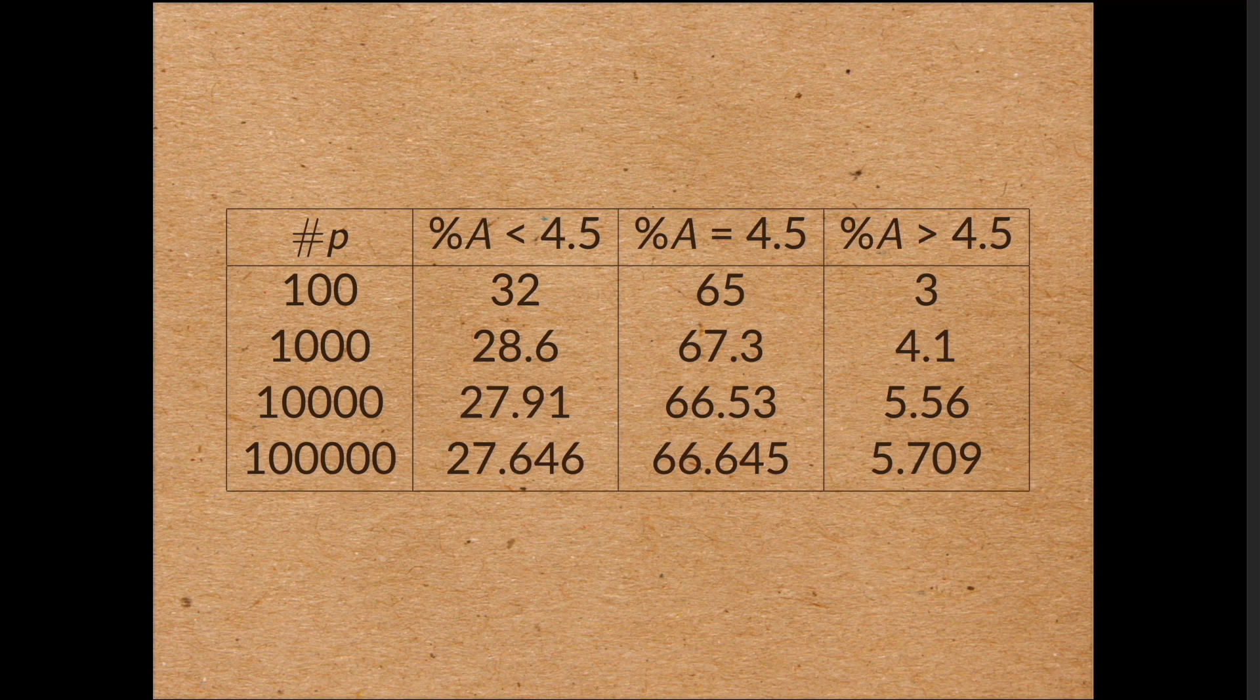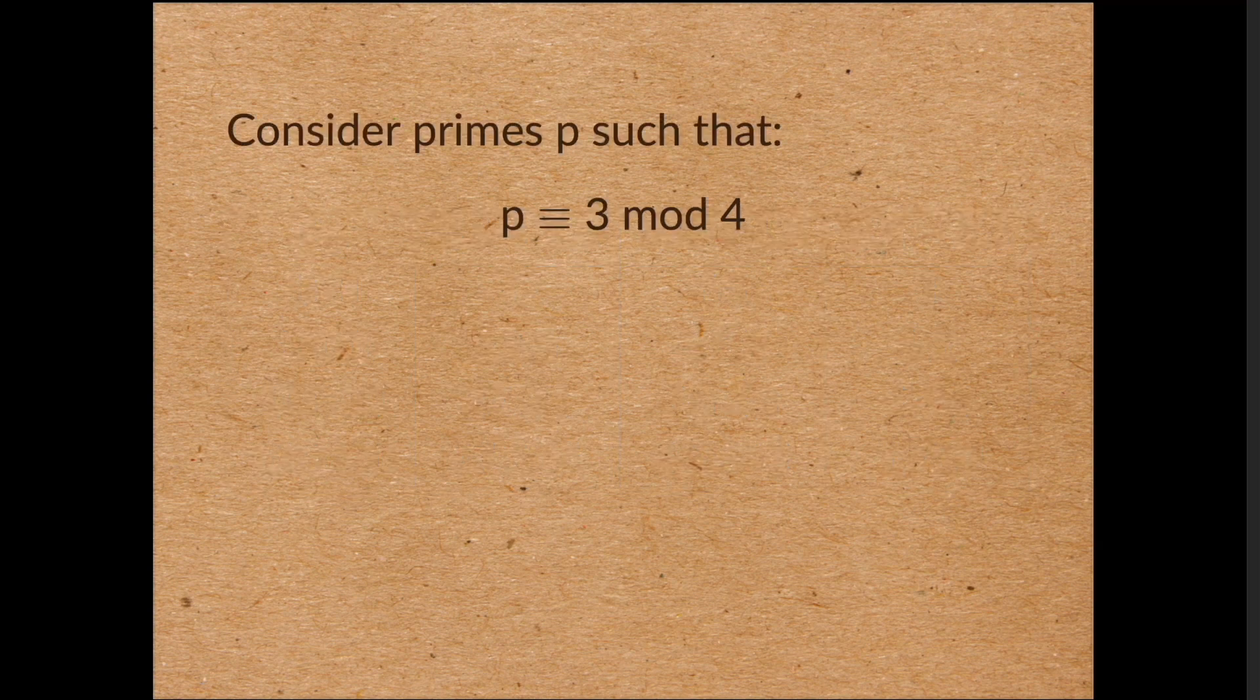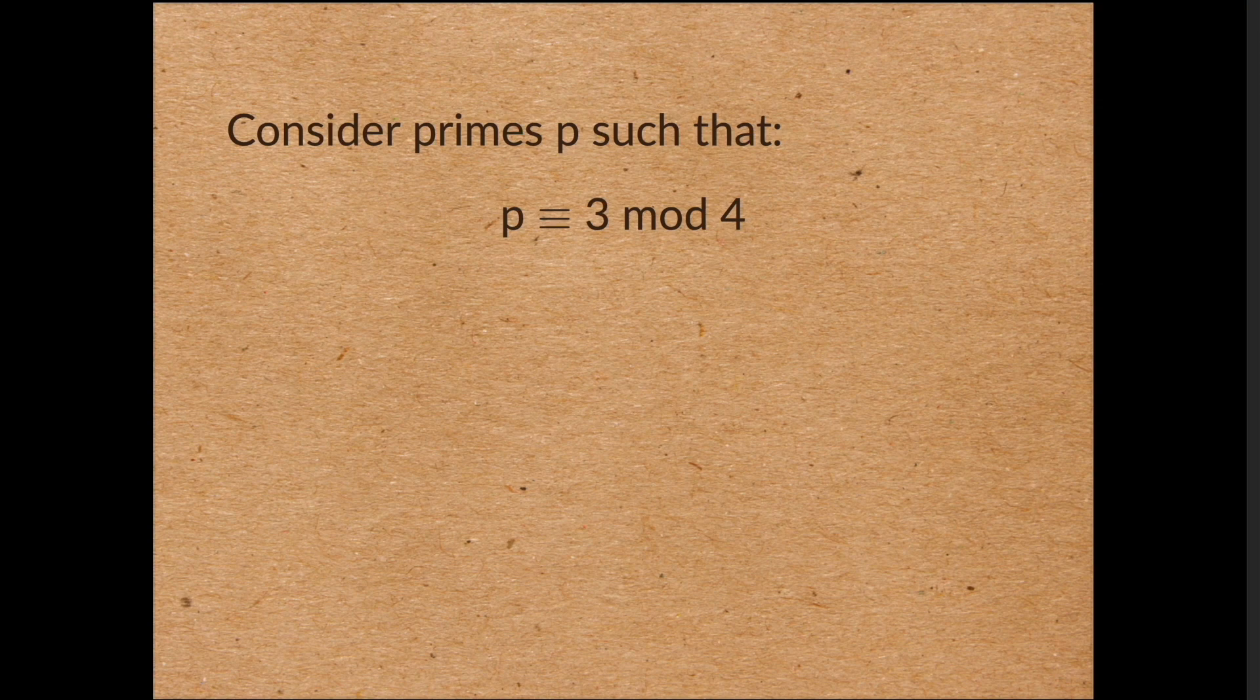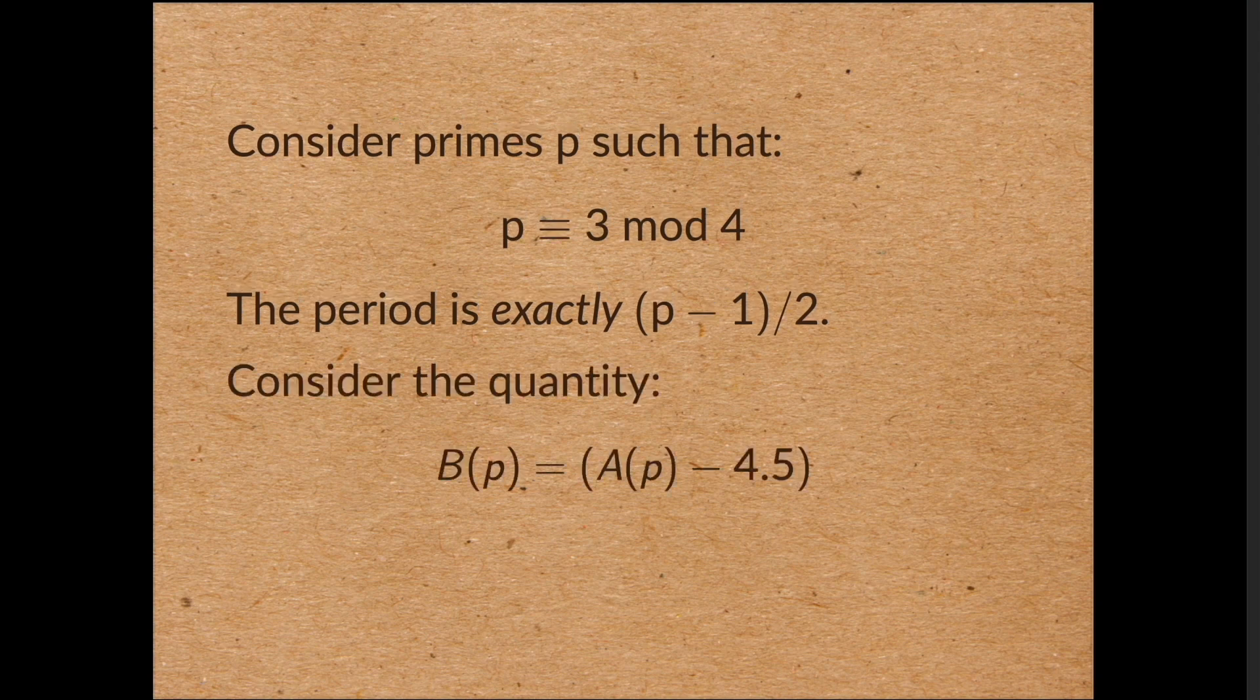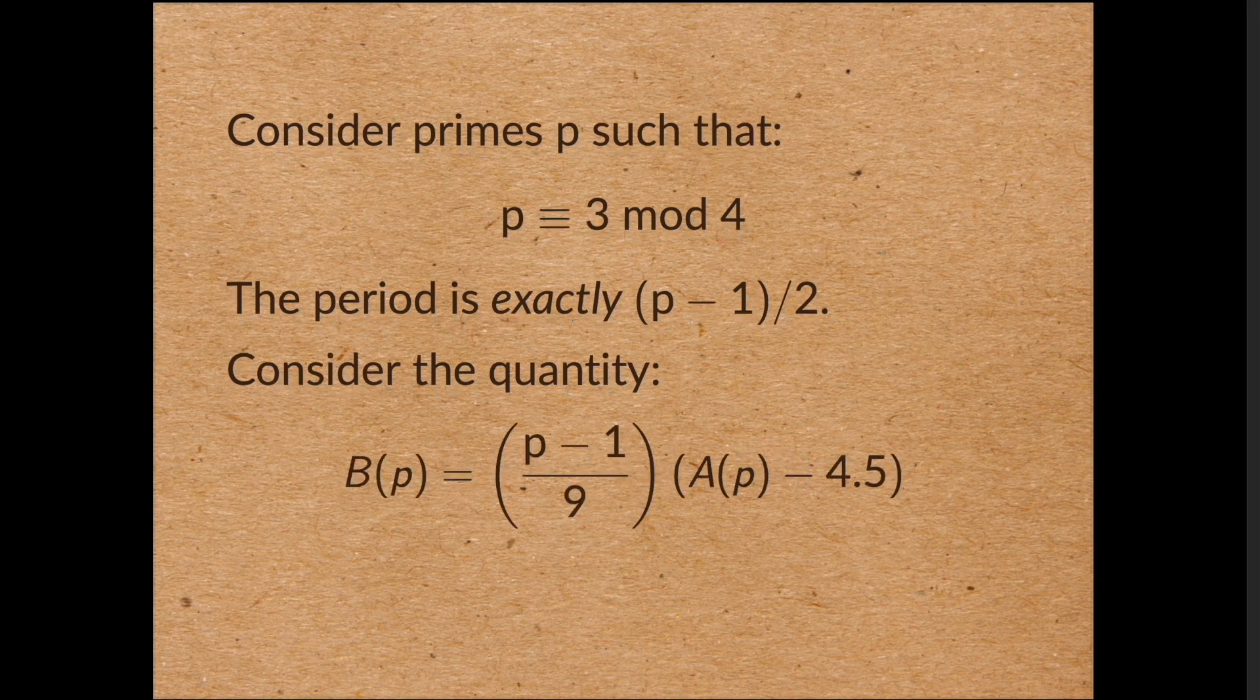Let's examine a very special type of prime. I want to take primes with the following two properties. First, p is 3 mod 4. Second, the length of the decimal expansion of 1 on p, the period, the length of the string that repeats, is exactly p minus 1 on 2. If p is 3 mod 4, then p minus 1 on 2 will be odd. For these numbers, let's consider the average digit minus 4.5. And let's also normalize it by multiplying this difference by p minus 1 divided by 9, just to make it an integer.